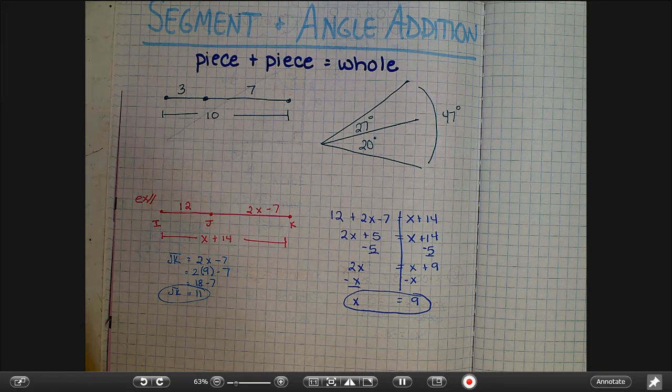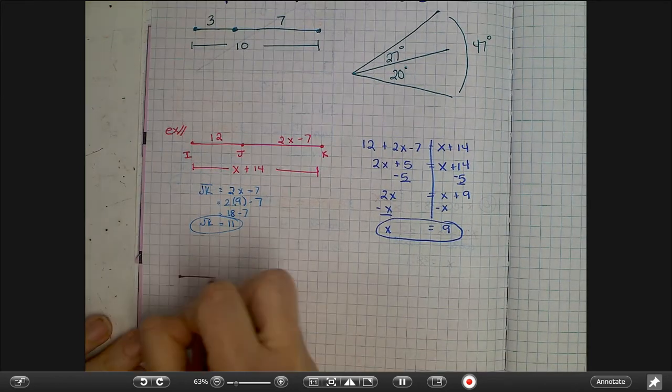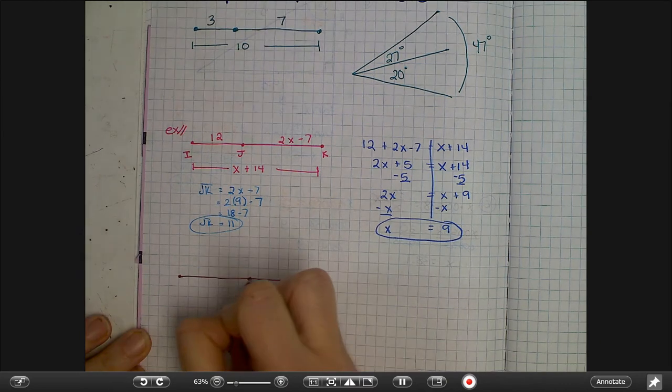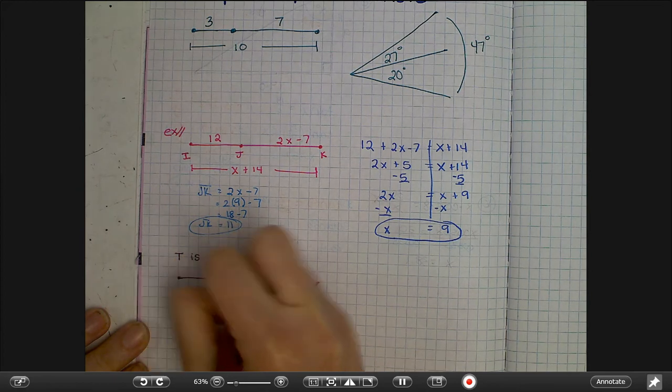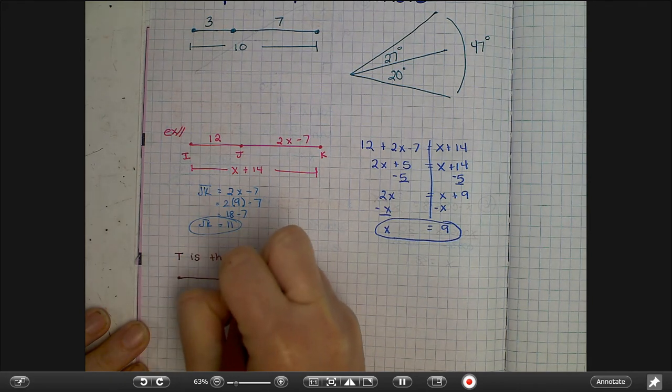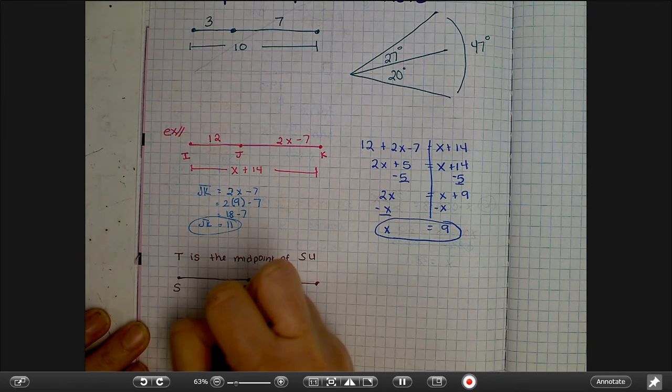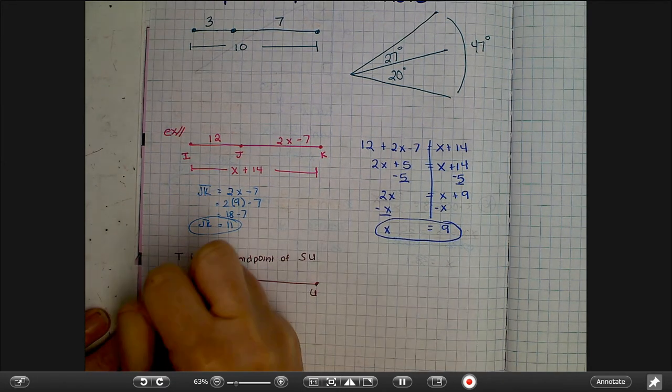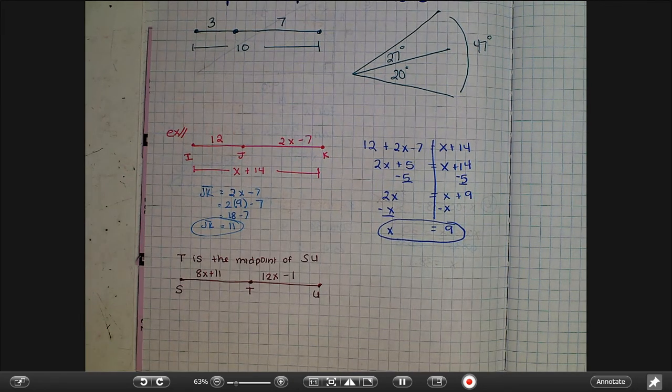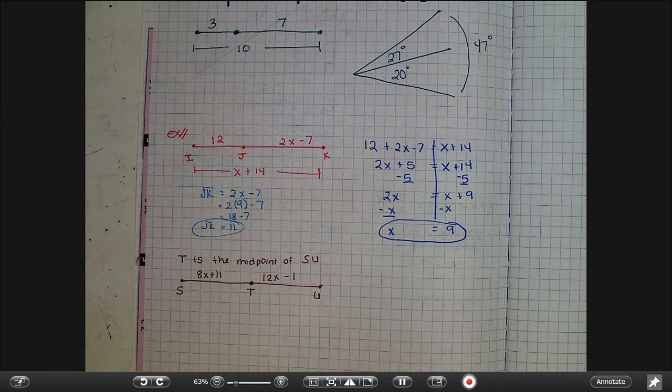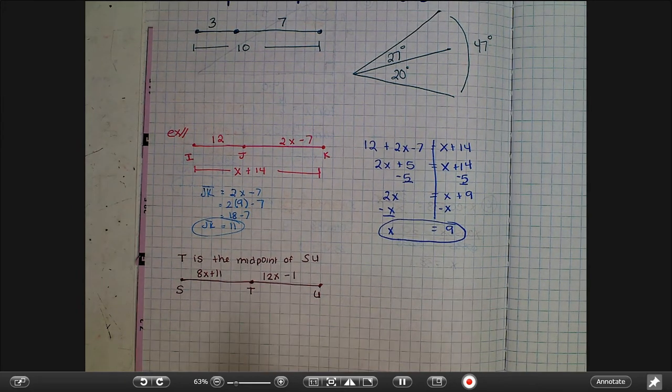Another way you might see this with angles would be a one step further, and this would be something like this: T is the midpoint of SU and then you'll have some information. Now for this one you wouldn't actually use piece plus piece equals whole because we don't know how long the whole thing is.